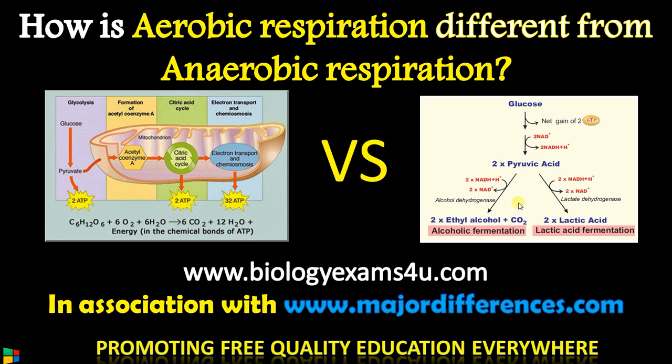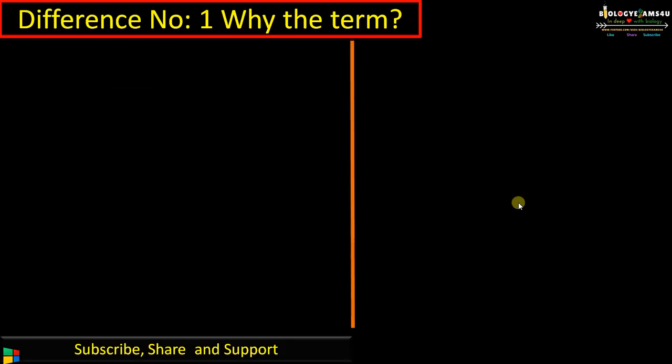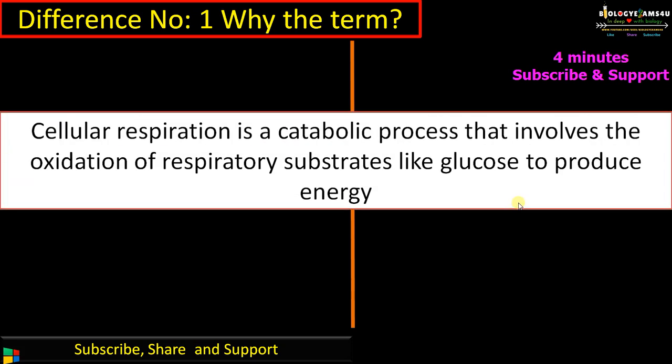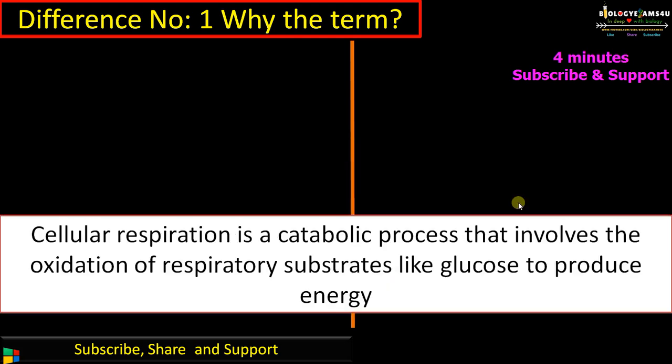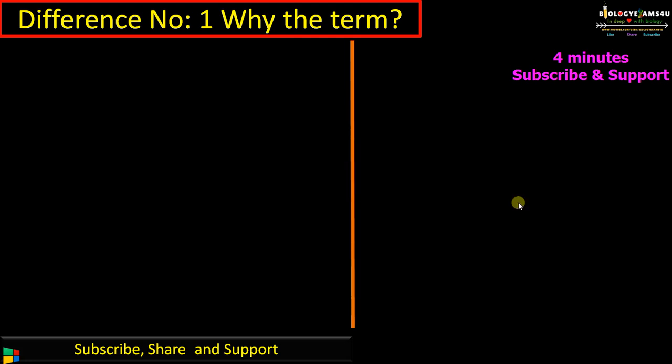Welcome to biology exams for a.com. Today's topic is the difference between aerobic respiration and anaerobic respiration. Let's begin with the common features of both types of respiration. Cellular respiration is a catabolic process, or breakdown process, that involves the oxidation of respiratory substrates like glucose to produce energy to drive cellular activities.